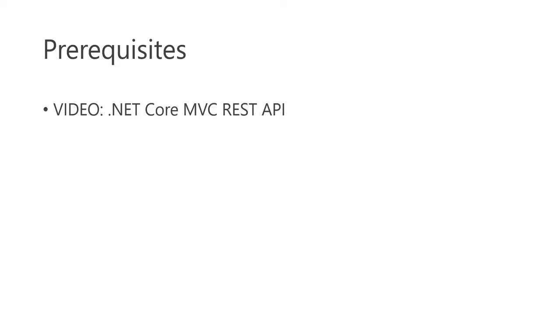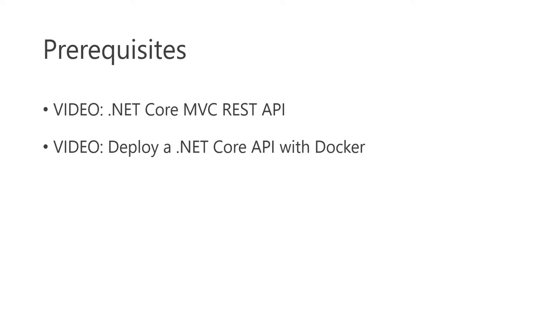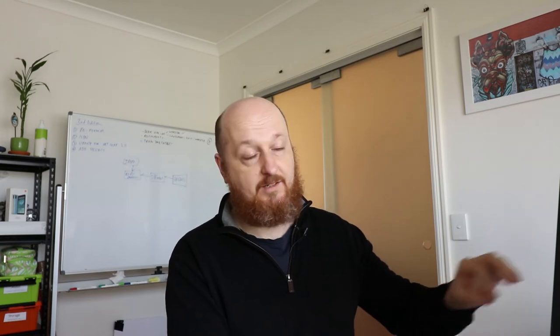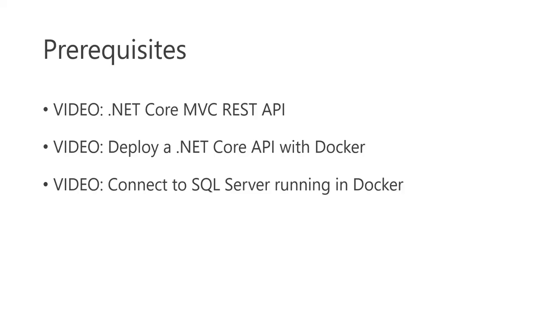If you want more detailed overviews of concepts that come up in this video, I'd suggest the following: first, my video on the .NET Core REST API — we'll cover that here but move through it quickly. Next, my video on how to deploy a .NET Core API with Docker, which covers constructing a Dockerfile to package a .NET application into a Docker image. And finally, how to connect to SQL Server running in Docker, though I cover most of that content here anyway.